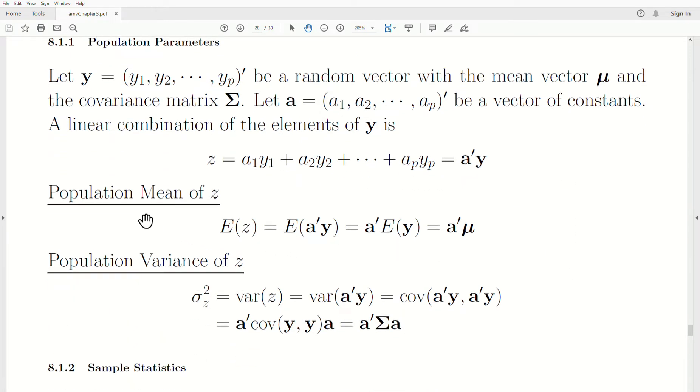Now, to find the mean, the population mean of Z, we take its expected value. But then, if we replace what Z is by A transpose Y, an expected value really only applies to random variables, not constants. So, the constant can be taken out front, but the expected value of Y is just the mean vector. So, this is the expected value of Y.